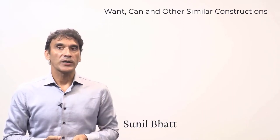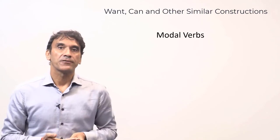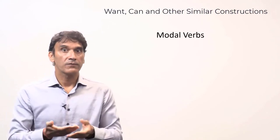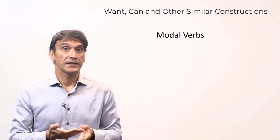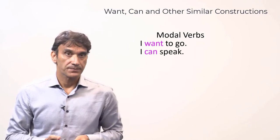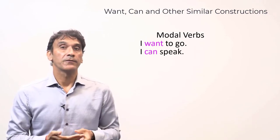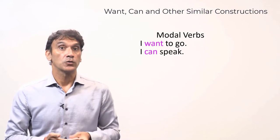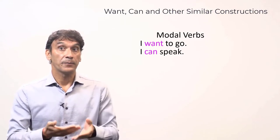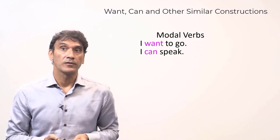The next grammar point is want, can, and other similar constructions. Such constructions are found with the help of model verbs. A model verb is a verb that is used with another verb in a sentence. Want and can are such model verbs. For example, 'I want to go' — here the verb want goes with the verb go. 'I can speak' — here the verb can goes with the verb speak, so can is also a model verb.